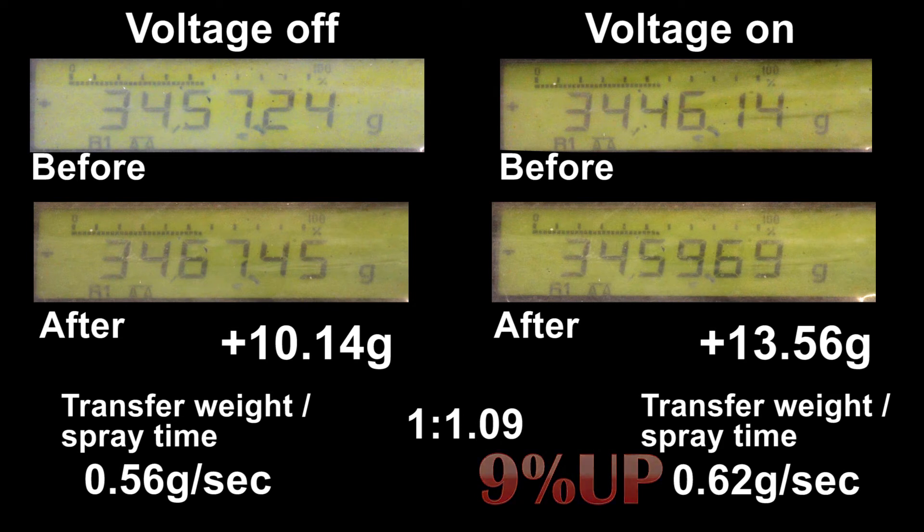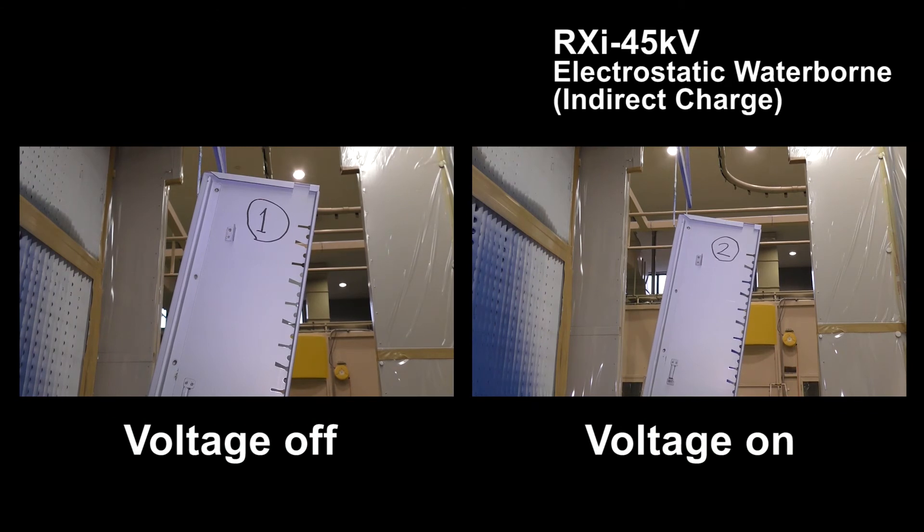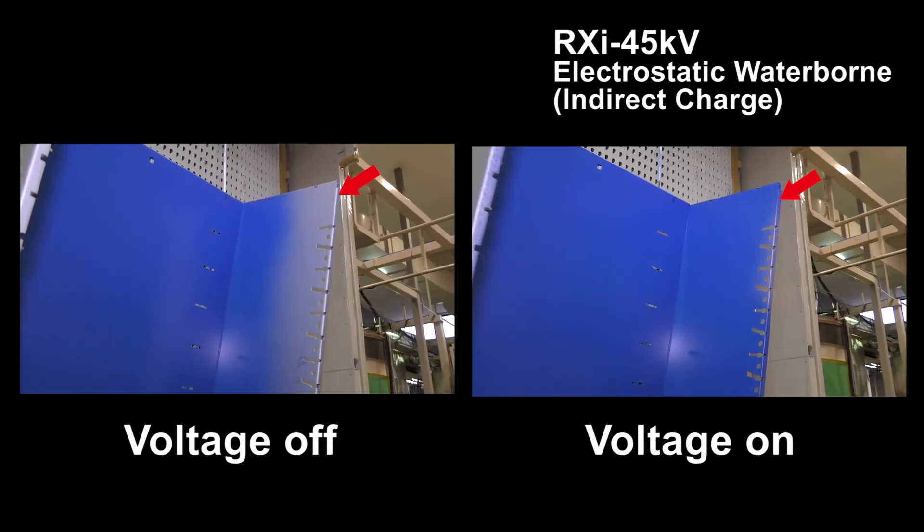You can see the difference between turn-on and turn-off electrostatics. When the electrostatic is turned off, attached material is about 0.56 grams per second, while turning on electrostatics is 0.62 grams per second. The attached material has increased 9%. You can see the difference.